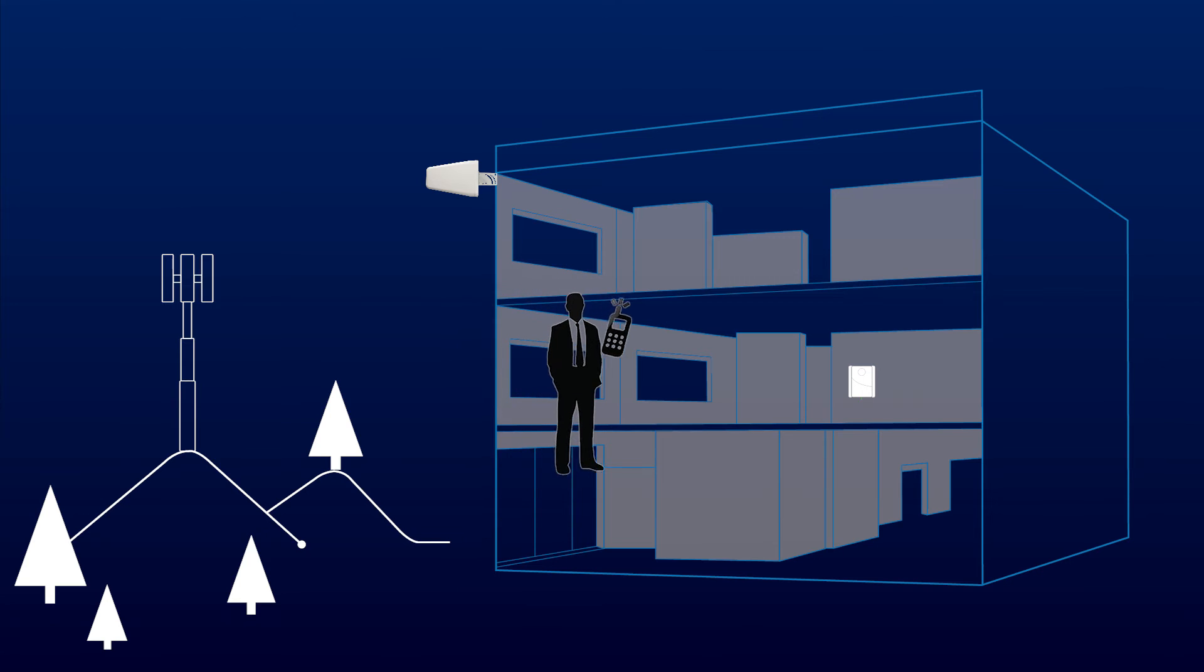The process is then reversed when you make a call from within the building. The inside antenna takes the signal from your phone, passes it to the signal booster, which amplifies it, and then sends that signal back to the cell tower, much stronger than the phone can achieve on its own.